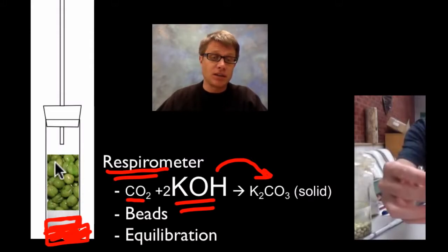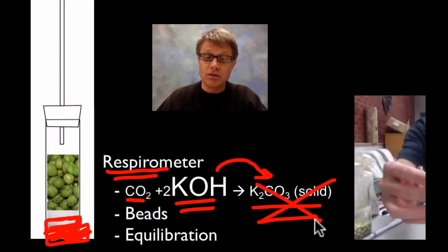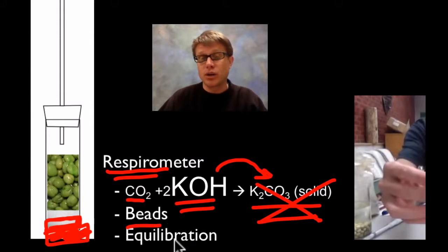In other words, if we were to put peas inside here they would take in oxygen but they would produce an equal amount of carbon dioxide, and so that volume wouldn't change. But since we have the potassium hydroxide it's going to convert any carbon dioxide that's produced into this solid, so we really don't have to worry about its volume. Some other things that we'll use in this lab: we'll use beads to make sure that we can account for temperature changes or fluctuations and also to keep the volume the same. And then we'll use an equilibration period.